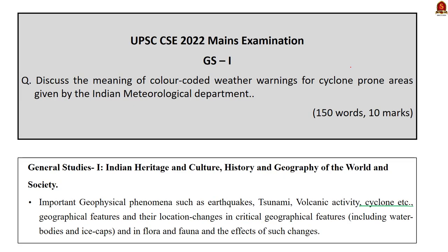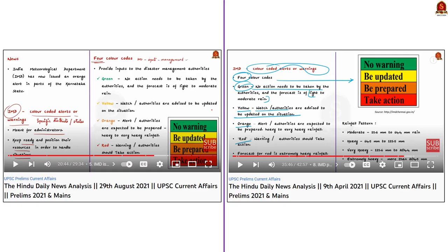Question number 5 in GS Paper 1: 'Discuss the meaning of color-coded weather warnings for cyclone-prone areas given by the Indian Meteorological Department.' This is a very direct question. We covered the color-coded weather warnings of the IMD twice: once in our 9th April 2021 Hindu News Analysis and again in our 29th August 2021 Hindu News Analysis. In both videos, we covered the color-coded weather warning system of the IMD and the meaning associated with each color. If you have gone through either video, you can easily answer this question.